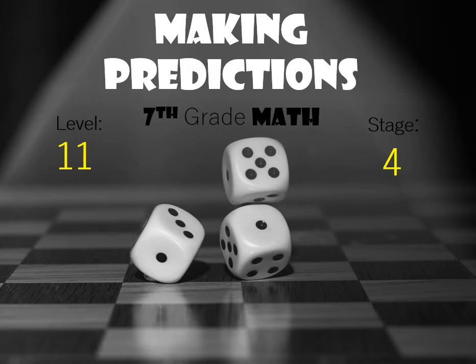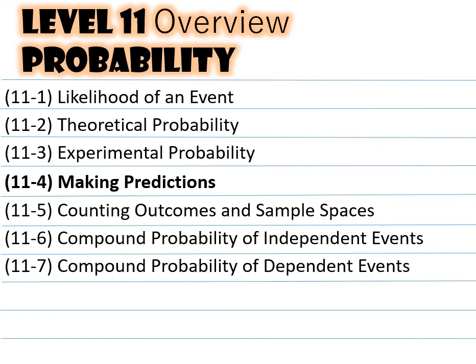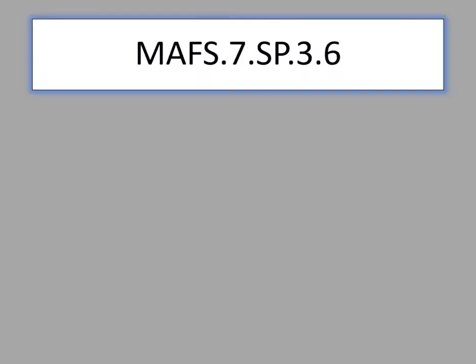In our previous two videos we took a look at theoretical probability and experimental probability. Now we're making predictions. This is level 11, stage 4, 7th grade math. We're on 11-4 making predictions and we're halfway done with this level.